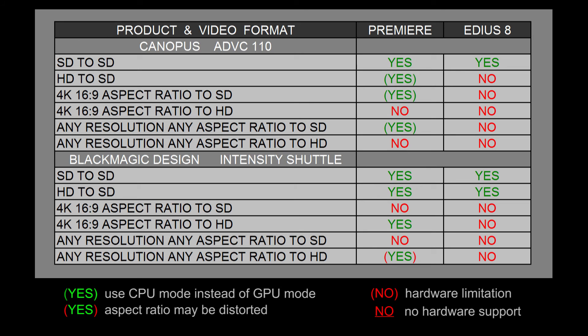As far as Premiere Pro and EDIUS, I wasn't really trying to battle the two of them — I just wanted to use two different software programs to show that different programs take advantage of these two products differently. Where Final Cut Pro 10, Avid, and Vegas would show up on that chart I don't know, but I do plan on testing those other software programs in the not-so-distant future. In part two I'll go over the chart in more detail, including pricing, ease of use, pros and cons, and comparisons to other third-party capture devices on the market.